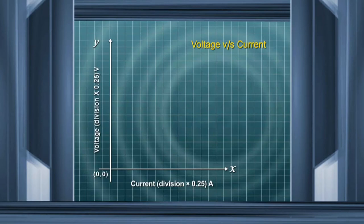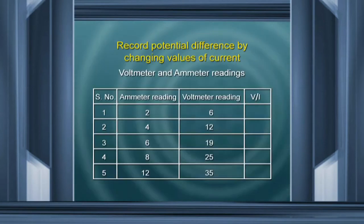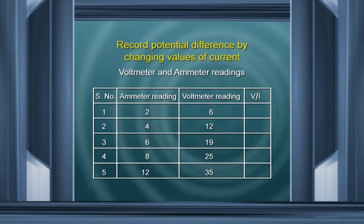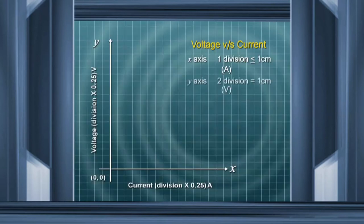We need to choose a scale for the two axes. For the x axis, we can safely take from the readings 2 to 12, with one division equal to 1 centimeter. On the y axis, we have to plot 6 to 35, so two divisions equal 1 centimeter. Let us mark on the x axis: 2, 4, 6, 8, 10, 12, 14.